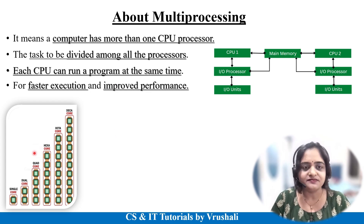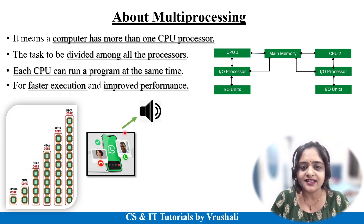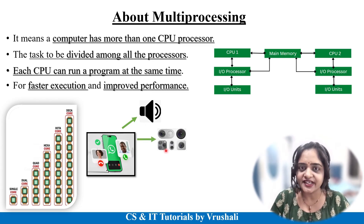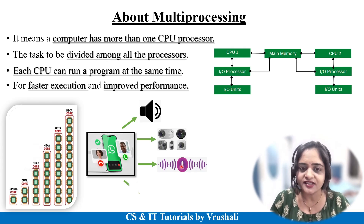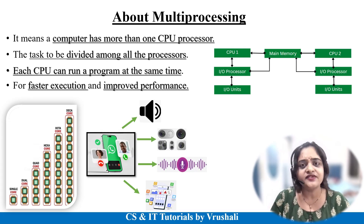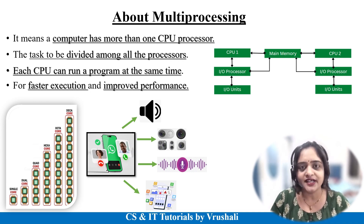Let's understand with an example. Suppose you are doing a WhatsApp video call: one core handles the audio processing, another core handles the camera functionality, another handles network communication, and another handles background applications. Your tasks are divided between all the processors, which leads to faster execution and improved system performance. This concept is called multiprocessing.